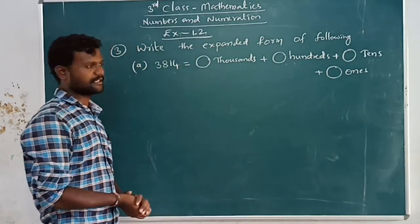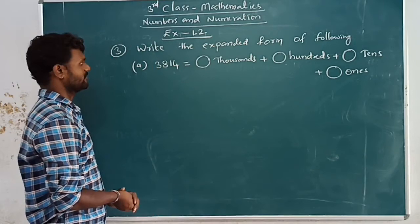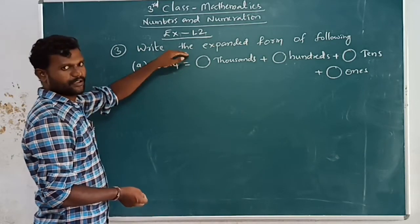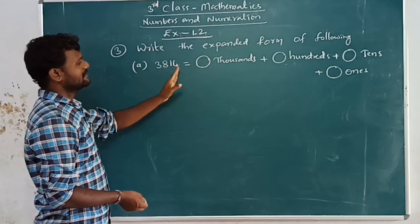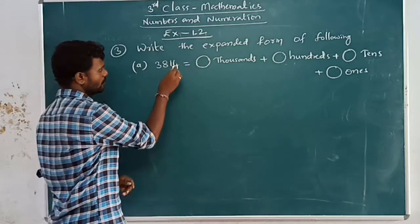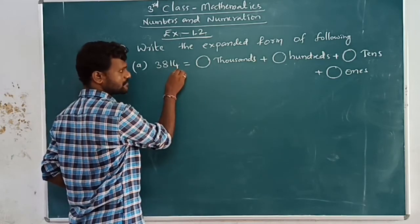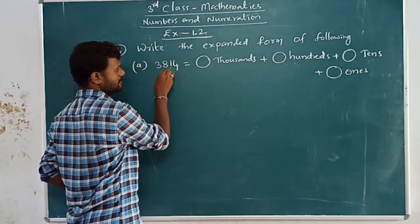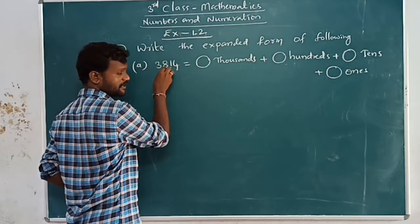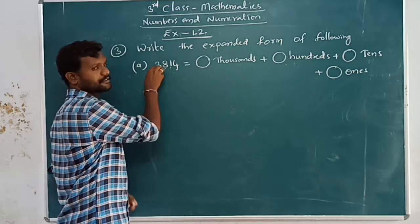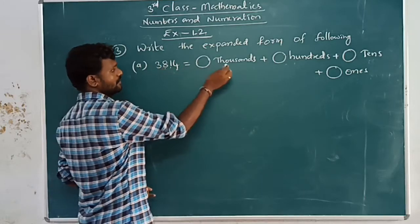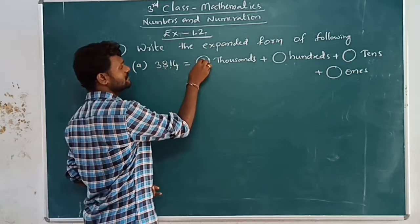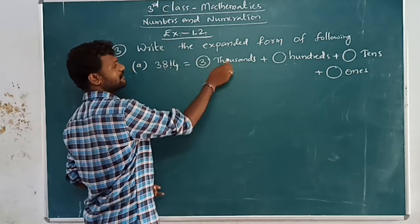Now we have to write the expanded form of this. To write the expanded form of a number, we have to identify which number is in which place. Four is in ones place, one is in tens place, eight is in hundreds place, and three is in thousands place. Three is in thousands, so three thousands.